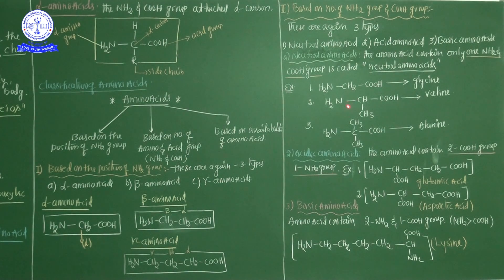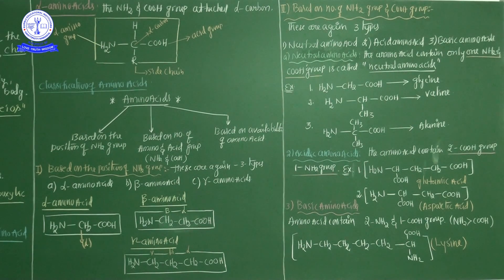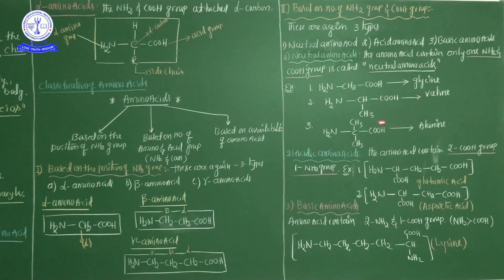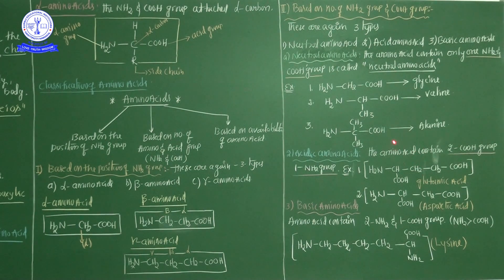Neutral amino acid: the amino acid made up of only one NH2 group and only one COOH group is commonly known as a neutral amino acid. This part is very important from both board and competitive entrance exam points of view. Glycine, valine, and alanine are the best examples of neutral amino acids. In competitive exams, they may ask 'which is the acidic amino acid in the following options?'